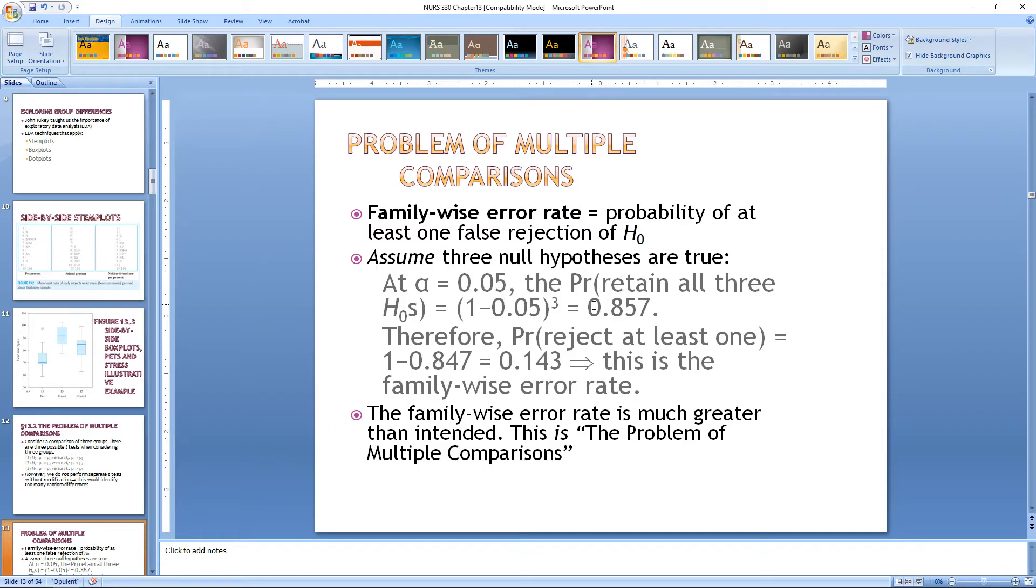A little bit of math: assume the null hypotheses are true. At an alpha level of 0.05, the probability of retaining all three nulls would be (1 minus 0.05) to the third power, or 0.857. Therefore, the probability of rejecting at least one null is 1 minus that, which is 0.143. This is the family-wise error rate. By running these tests for these null hypotheses each way, we're increasing the error rate up to 14%. And remember, we don't like anything really past 5%, so increasing it to 14% is drastically huge.